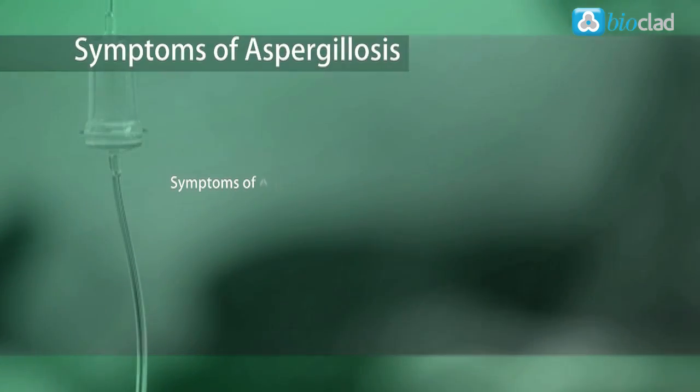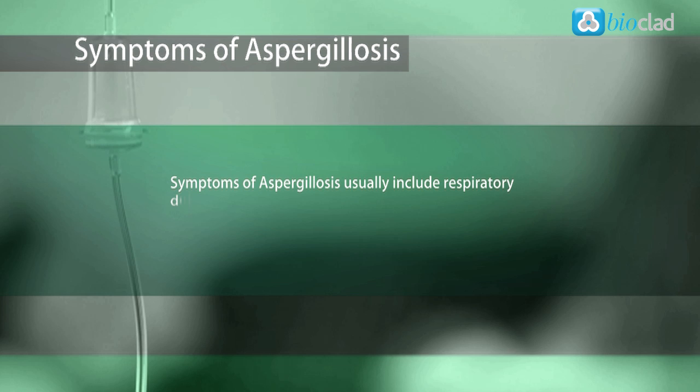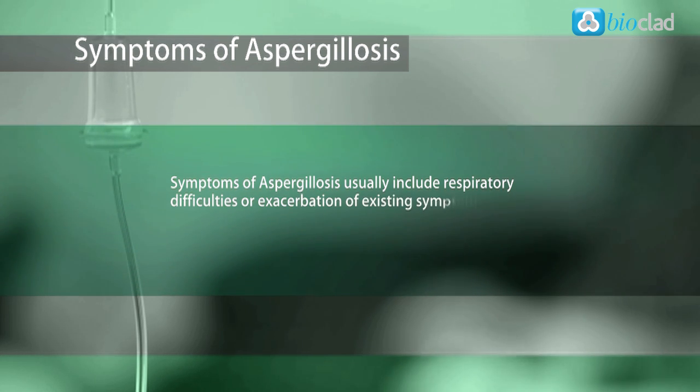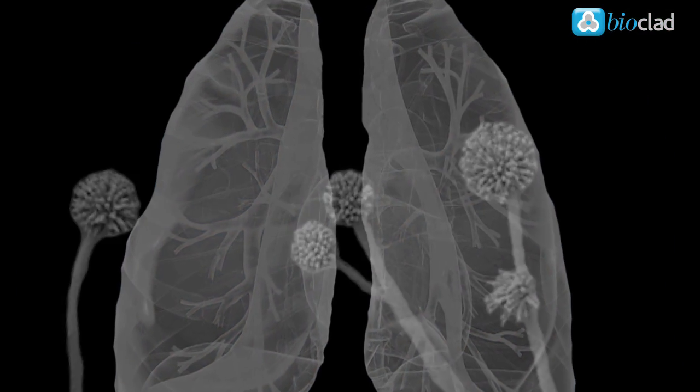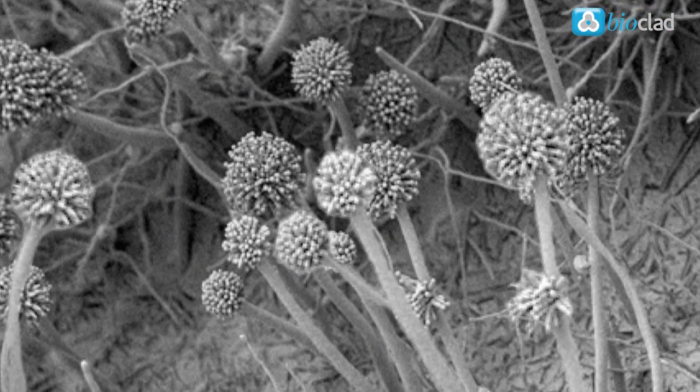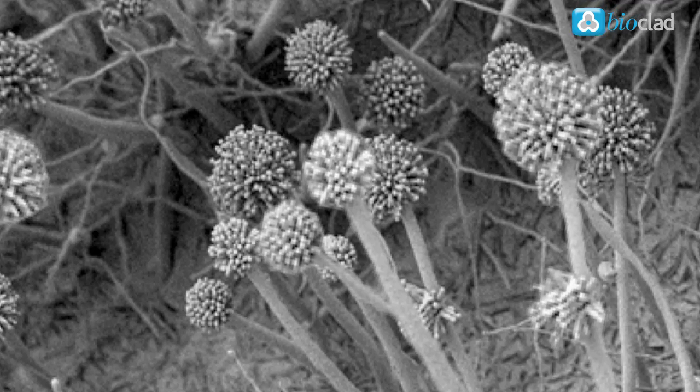Symptoms of Aspergillosis usually include respiratory difficulties or exacerbation of existing symptoms such as asthma. Infections can lead to fungi growing inside the lungs and sinuses, causing chronic coughing, blocked sinuses, and headaches.